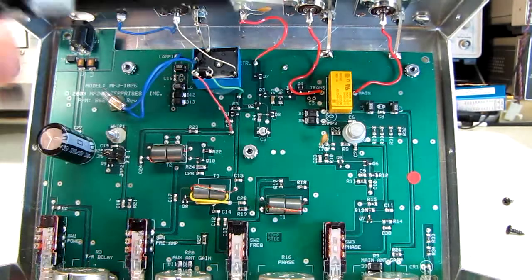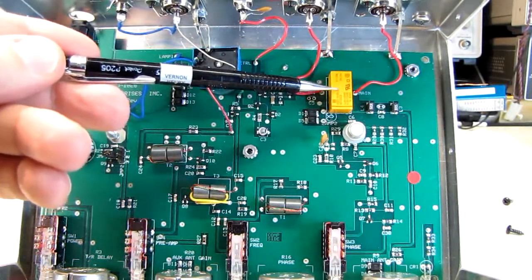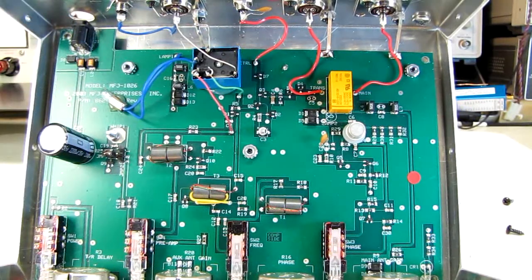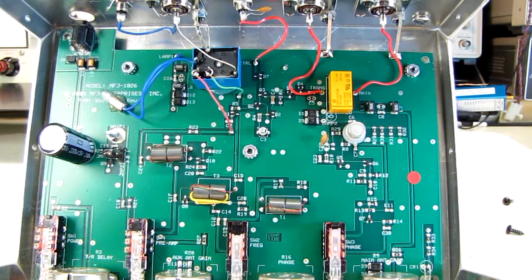Now, this is the relay that they're using in this unit to switch between transmit and receive. That's handling your 100-watt transmitter, and that scares me. The contact ratings on this thing are 1 ampere. It seems to work, but you certainly don't want to drive any more than 100 watts through that.